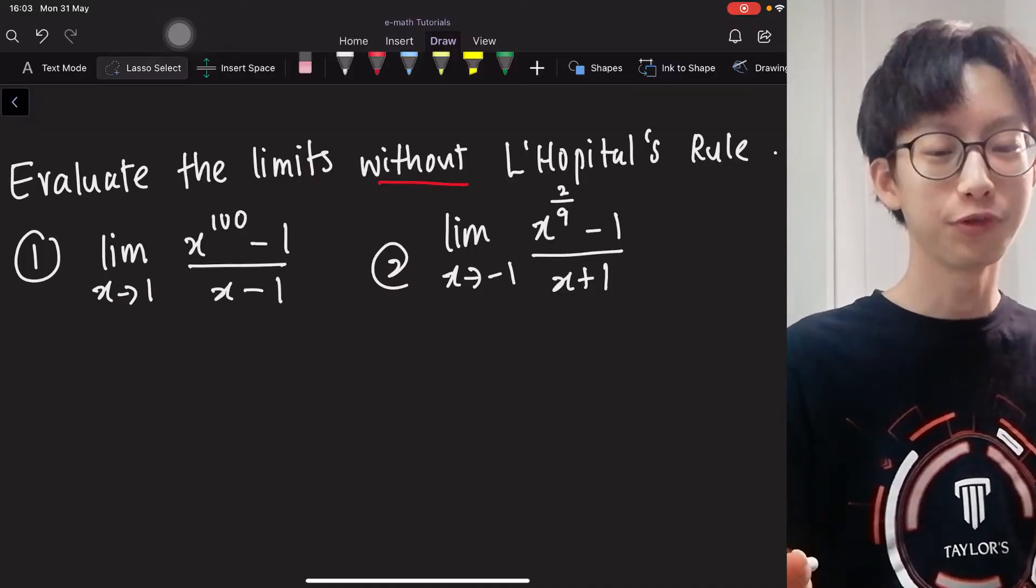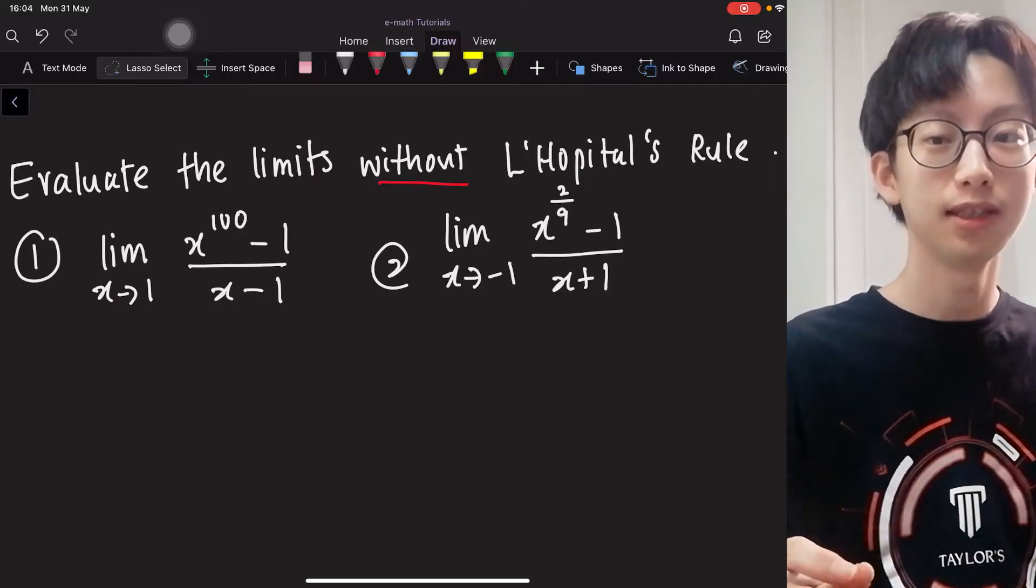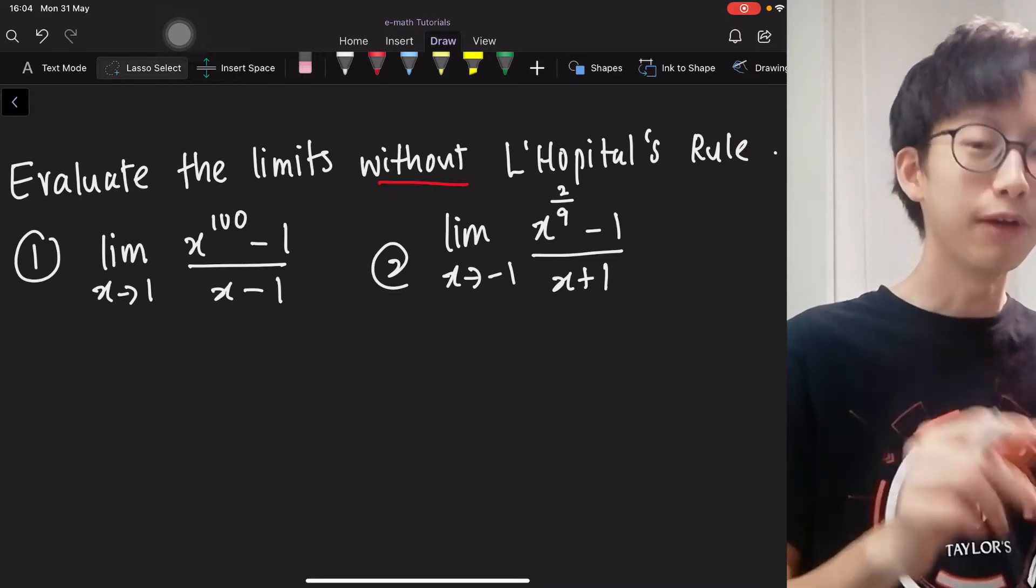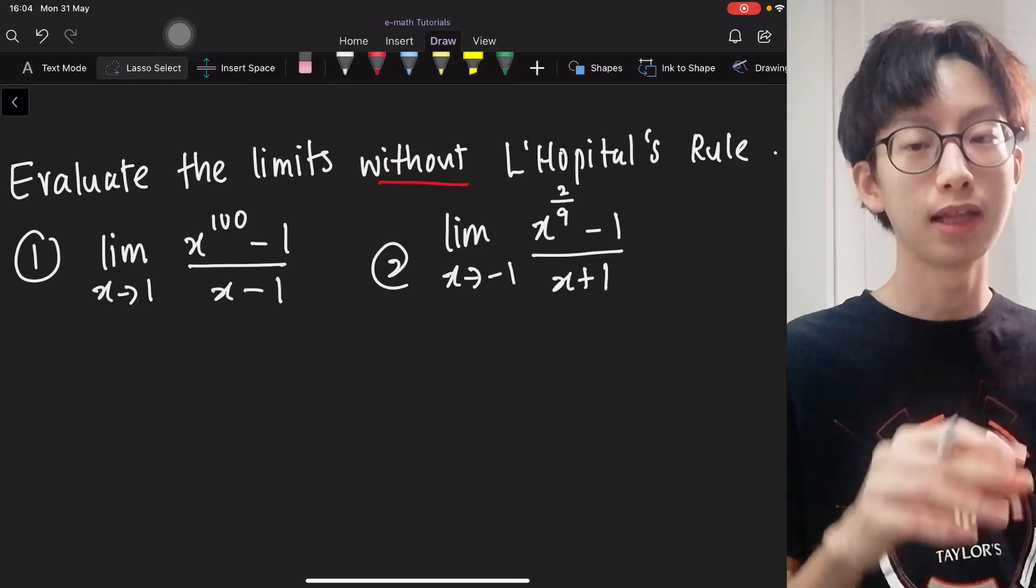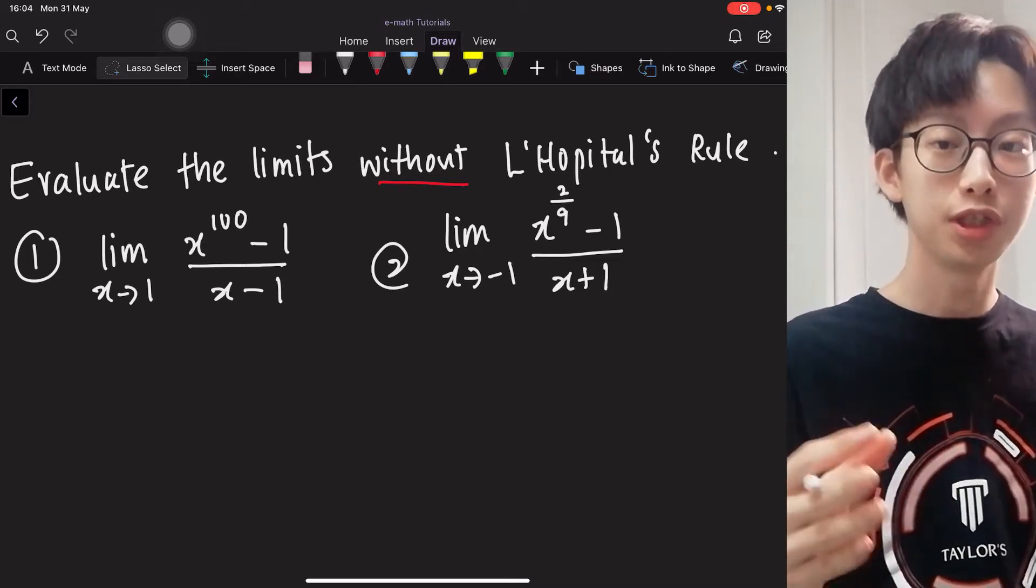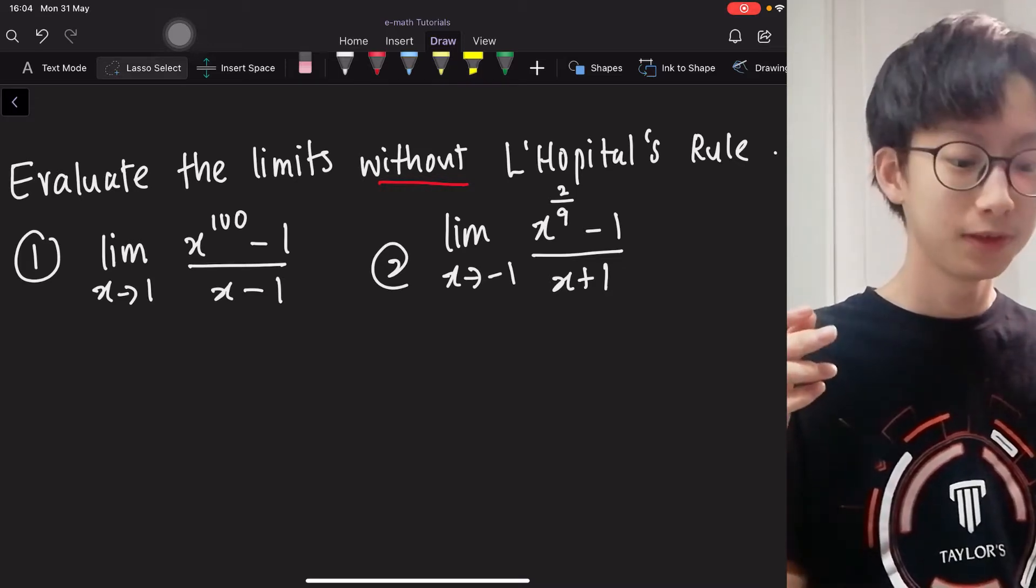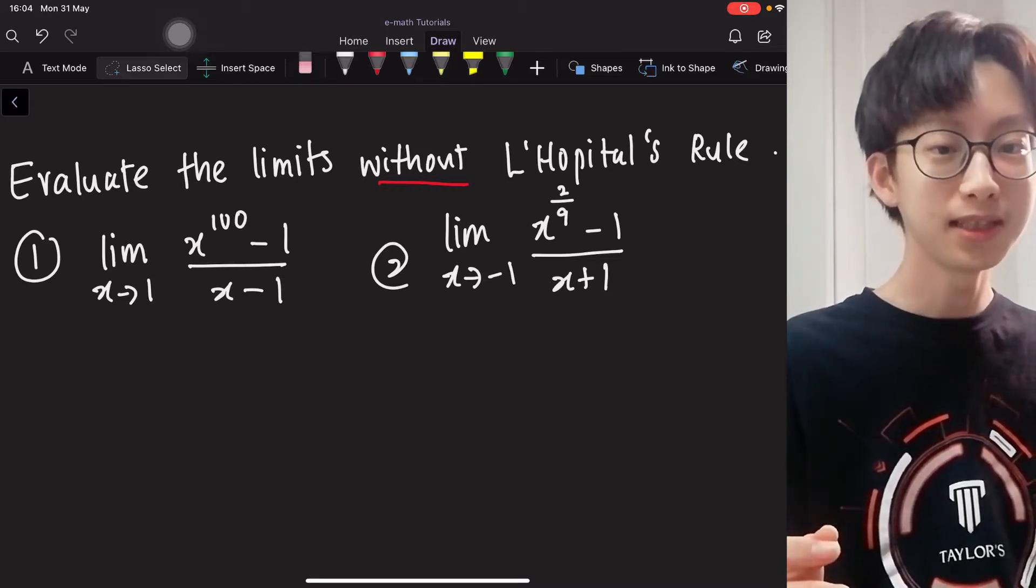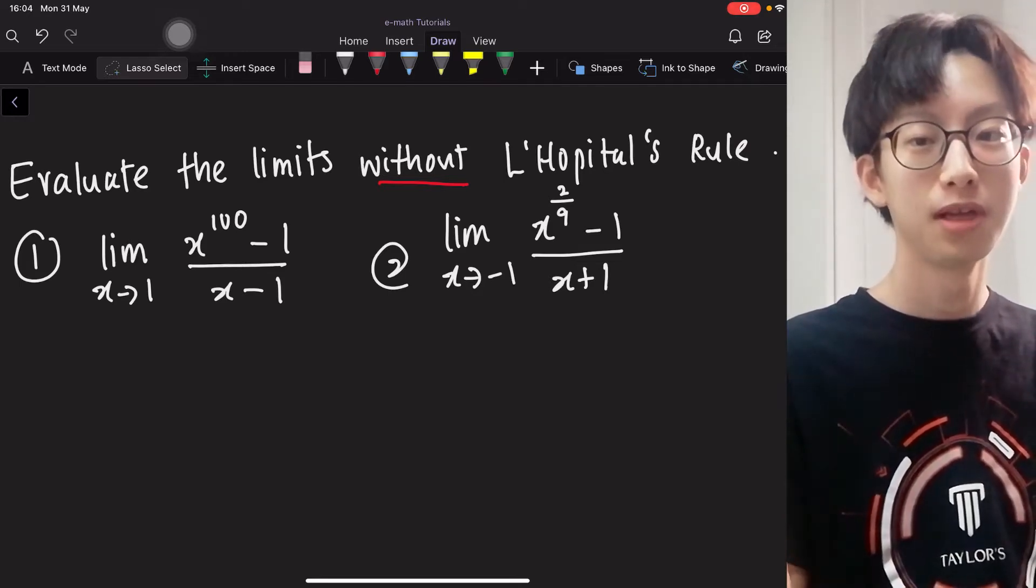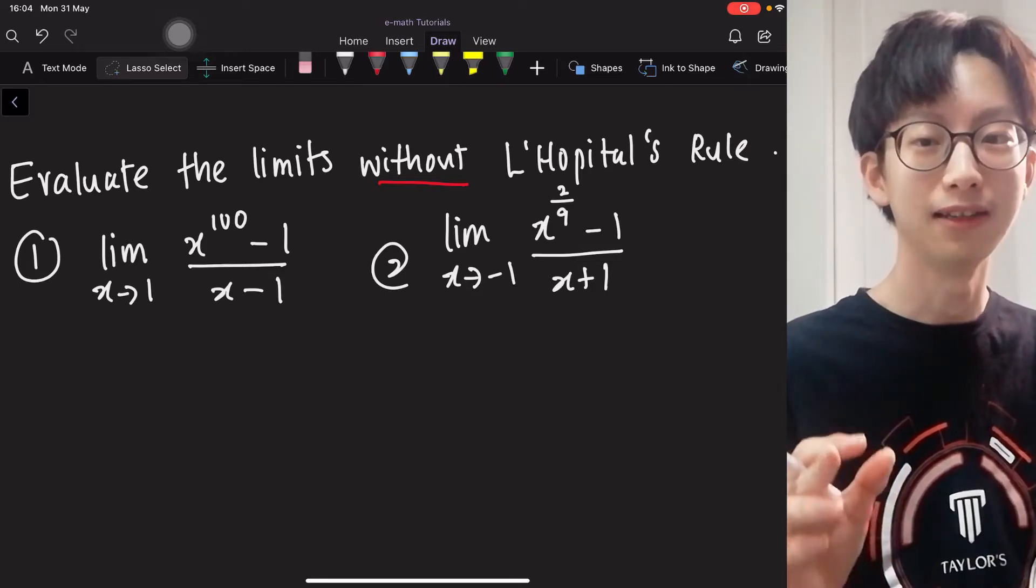I know the first thing that came to your mind when you look at these two questions is L'Hôpital's Rule, right? Because immediately you can see that when you plug in 1 and negative 1 into the expression, you'll get 0 over 0, which is an indeterminate form, which is the passport to use L'Hôpital's Rule. But today, our rule is that we can't use L'Hôpital's Rule, and I will show you how I do that.